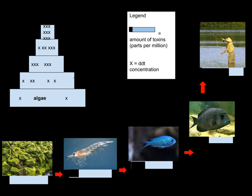When eaten by another organism, fats are absorbed in the gut, carrying the substance, which then accumulates in the fats of the predator. Since at each level of the food chain there is a lot of energy loss, a predator must consume many prey, including all of their lipophilic substances.